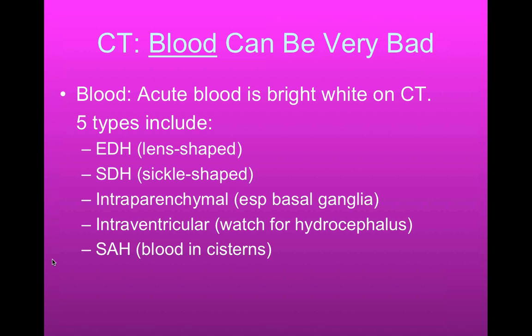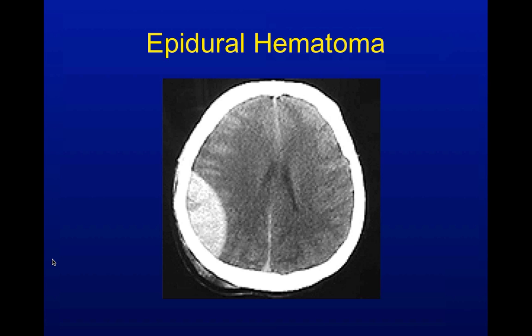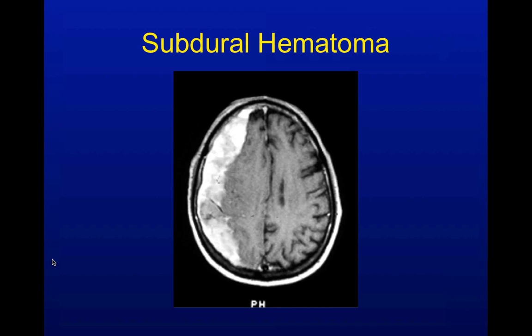We'll go through lots of images here. For that first piece — blood — we're going to look for epidural hematomas, subdural hematomas, intraparenchymal bleeds, intraventricular bleeds, as well as subarachnoid hemorrhages. So we have a beautiful lens-shaped hematoma here — this is an epidural hematoma. Maybe a little hint of mass effect; the ventricles are a little collapsed over here on this side. Epidural hematoma with a little bit of midline shift.